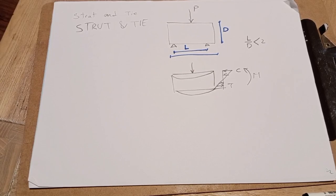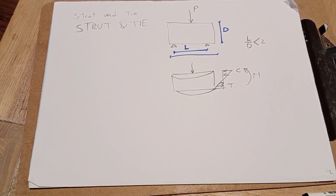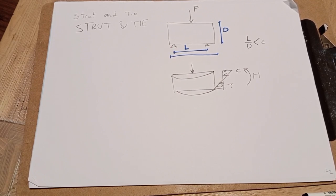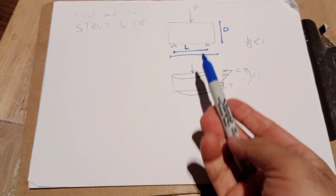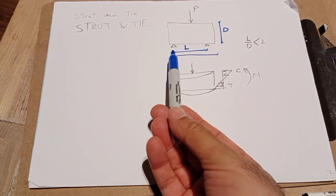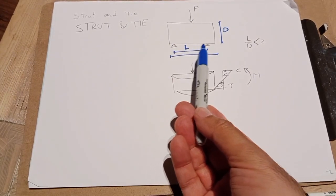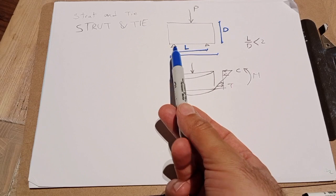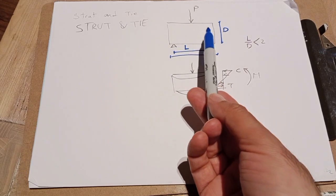Hello everyone, today I want to talk about the strut and tie — what's the concept and explanation in very simple words. We are especially talking about reinforced concrete structures and the strut and tie problem. Suppose we have a beam with a point load sitting on two simple supports, where the distance between supports is L and the depth of the beam is D.